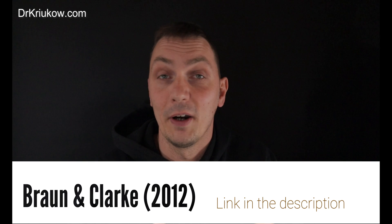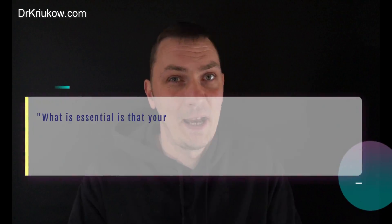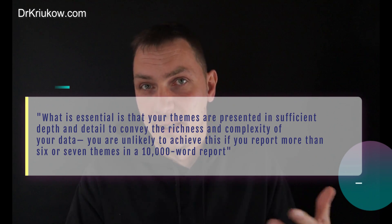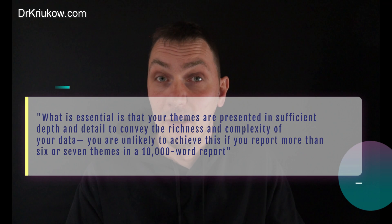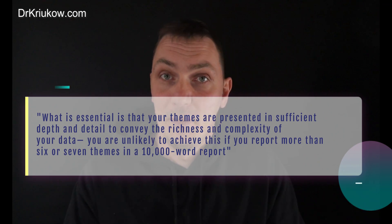That is also in line with what Braun and Clarke say when they explain their average number of themes, which they explain to be between two and six themes for a 10,000-word report or journal article. As they justify this number, it would be difficult to discuss a larger number of themes with sufficient detail and really provide an in-depth discussion for this kind of a report.